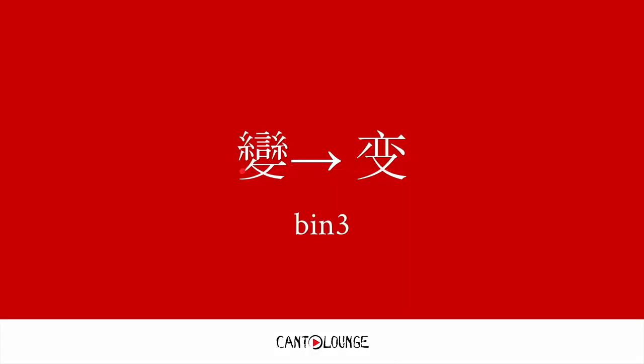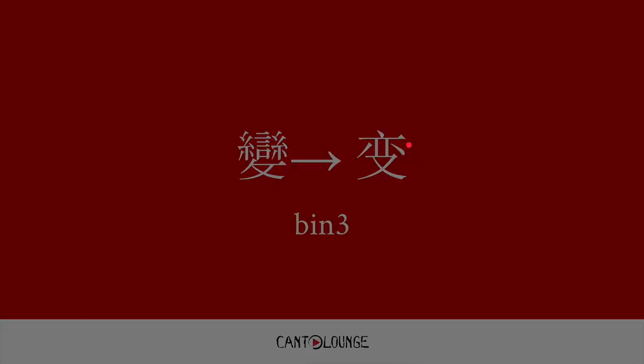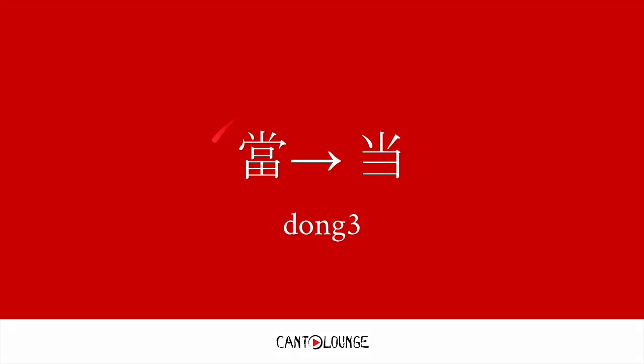Being here, it's a similar thing — they kept this bottom bit, they got rid of this, and then they changed this entire bit to this, so you can still recognize the character. 变 meaning to change. And 当 kept this bit and simplified this bit, and you can still recognize it. 当 can mean many things — I'm not even going to try to explain it here.